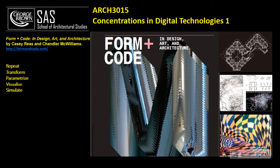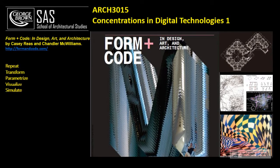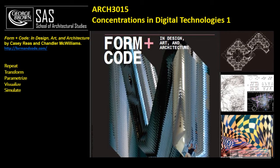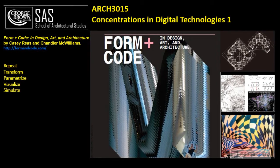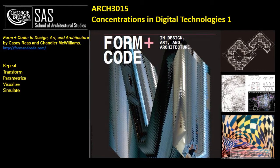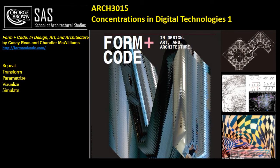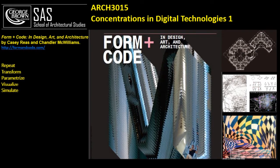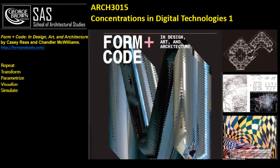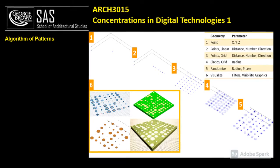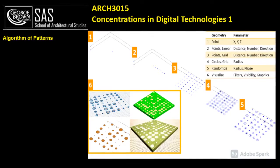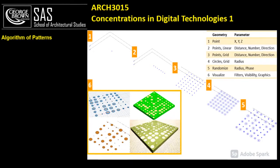In this course we learned some ideas from the book Form plus Code in Design, Art and Architecture, written by Casey Rees and Chandra McWilliams. We learned about how repeat, transform, parametrize, visualize, and simulate help us to create more complicated patterns and geometries. We also learned about the algorithm behind the patterns — how they are created and what the steps are to create them.